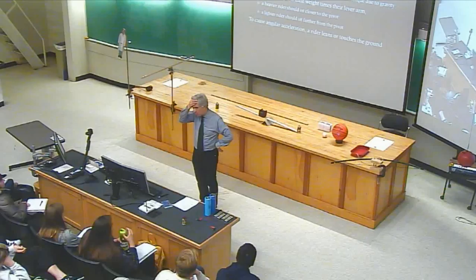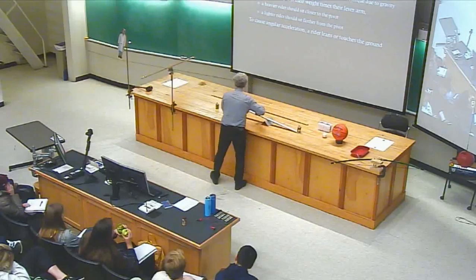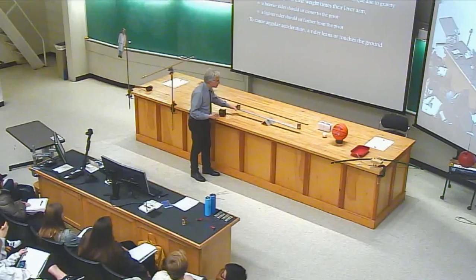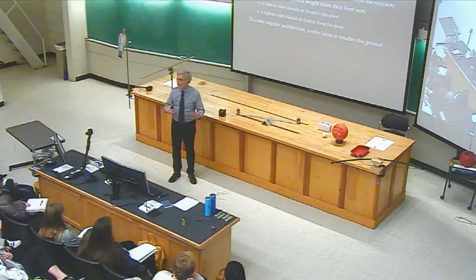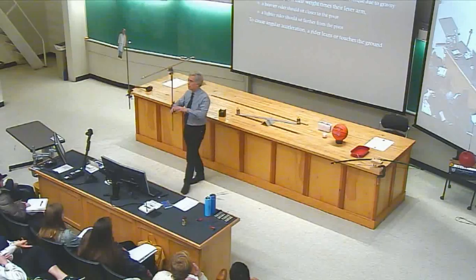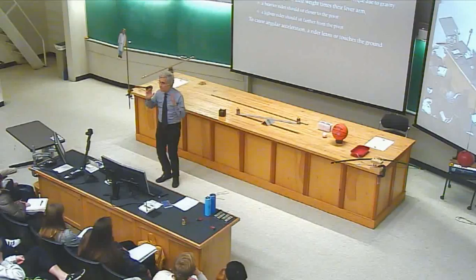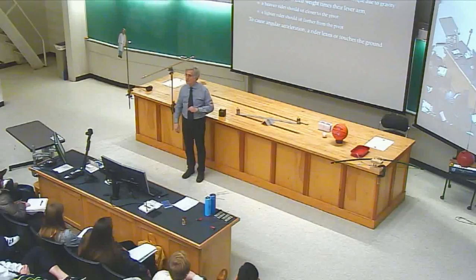Another way to think about a balanced seesaw: gravity pulls on each part of the seesaw-and-riders system independently. Is there one effective location where gravity can be said to pull the whole thing? Yes — this is called the center of gravity: the effective location of an object's weight for all practical purposes.